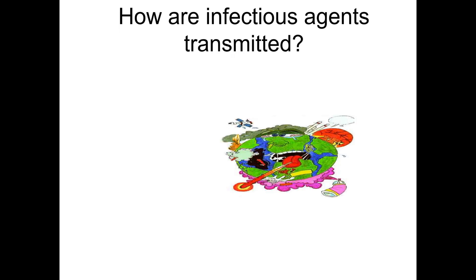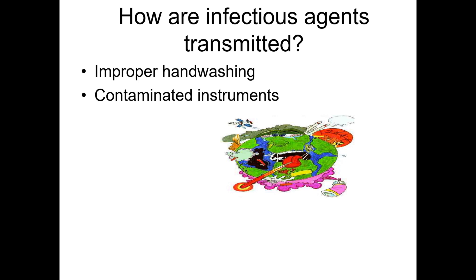How are infectious agents transmitted? Infectious agents are transmitted in various ways, often due to improper practices. Key methods include: improper hand washing, which allows pathogens to spread from person to person or to surfaces; contaminated instruments, where reusing or improperly sterilizing instruments can introduce pathogens into the bloodstream; direct contact with blood, saliva, or other bodily fluids from an infected person; and needle stick injuries, which are a significant risk for healthcare workers, exposing them to blood-borne pathogens like HIV or hepatitis. Proper hand hygiene, instrument sterilization, PPE use, and safe needle handling significantly reduce the risk of transmission.